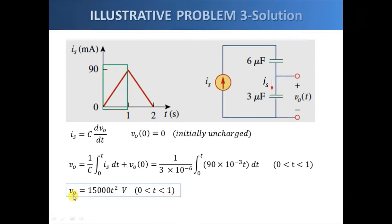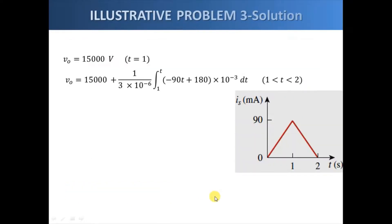We can also use this equation to get V_o at exactly t equals one second. Simply substituting t equals one second, we find that the voltage at exactly t equals one second is 15,000 volts.